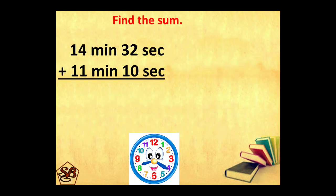Let's take some more examples. Now we are adding minutes and seconds. Adding the smaller unit, we get 42 seconds. Adding the bigger unit, we get 25 minutes. Here again the smaller unit is less than 60, because 1 minute is equal to 60 seconds. So regrouping is not required. 25 minutes 42 seconds is our final answer.